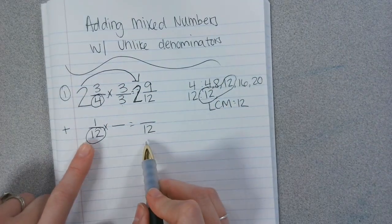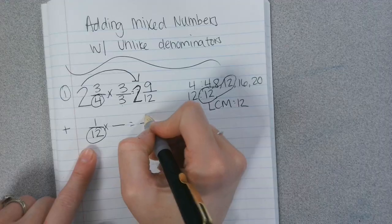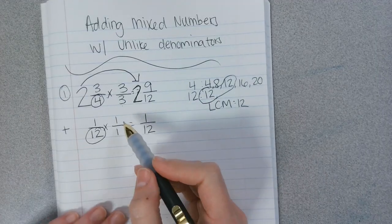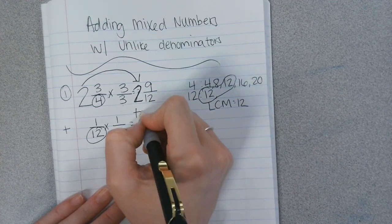Then, did the denominator change here? No. So the numerator will stay the same. If you want to multiply it by something, you can multiply it by 1 over 1. Now we're going to add it up.